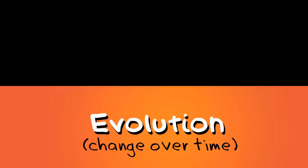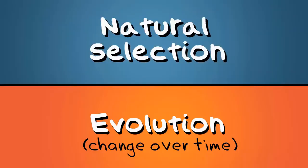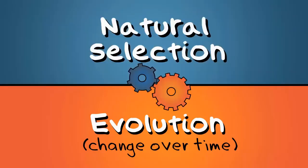Evolution, which is change over time, could take place because natural selection has occurred. Natural selection is a mechanism of evolution.